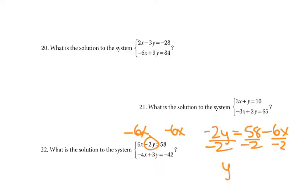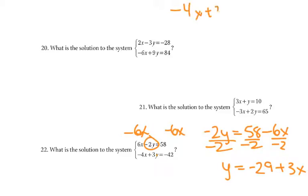And I'd get y equals negative 29 plus 3x, which I would plug in for y. So I'd get negative 4x plus 3 times negative 29 plus 3x equals negative 42.